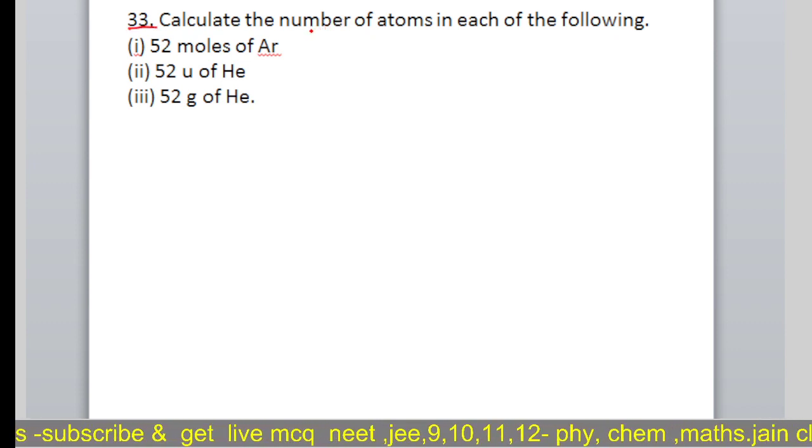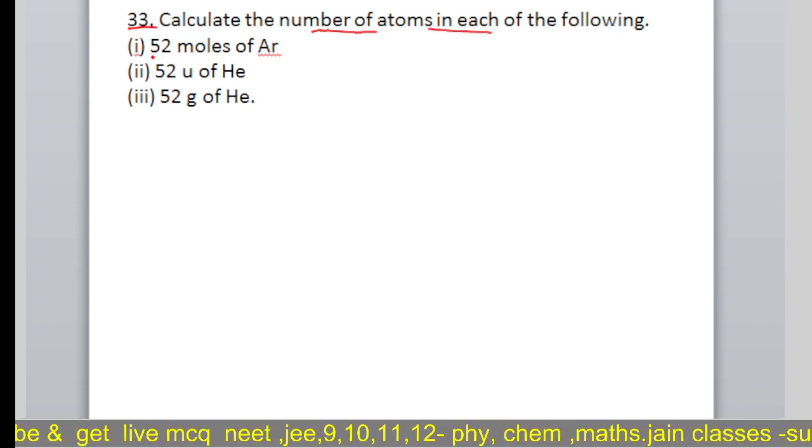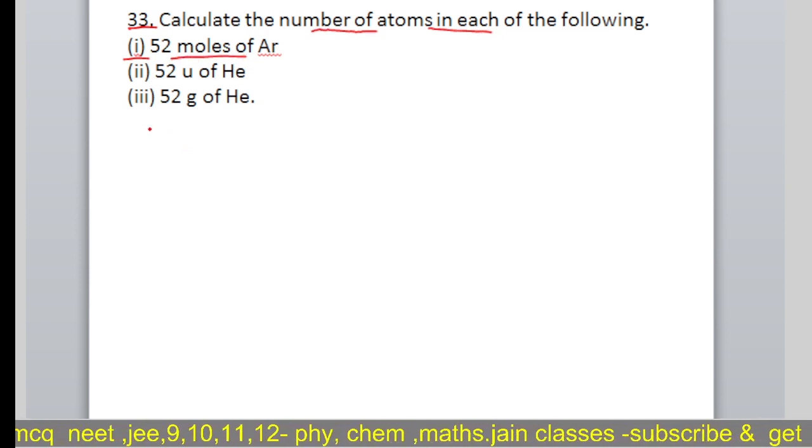This is question number 33. Calculate the number of atoms in each of the following. The first part is 52 moles of argon.